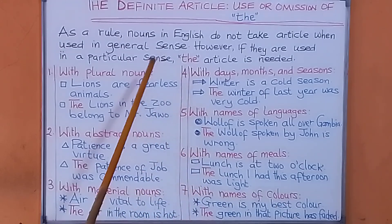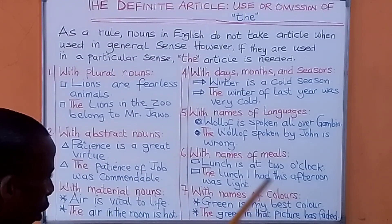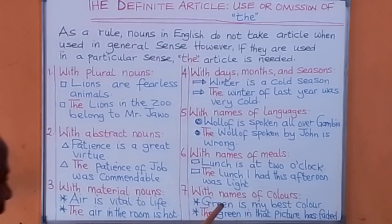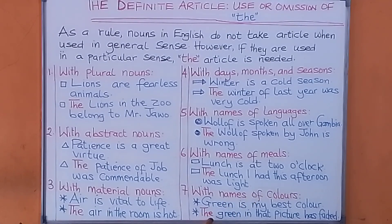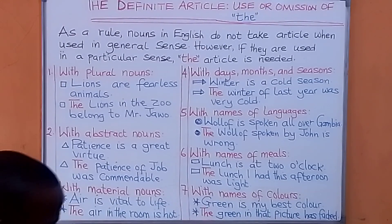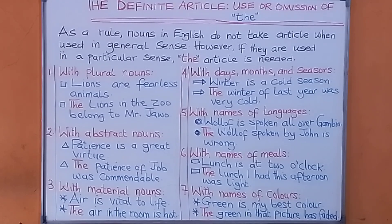Number seven: with names of colors — green, blue, red. If we are using names of colors in general sense, we don't need an article: 'Green is my best color.' 'Red is not a nice color.' 'Blue is my favorite color.' But if we are using a color in a particular sense, then we put the article: 'The green in that picture has faded.' We are using green in a particular sense. If you like our video, please share, subscribe and give us a thumbs up.